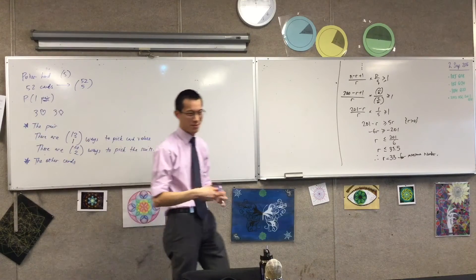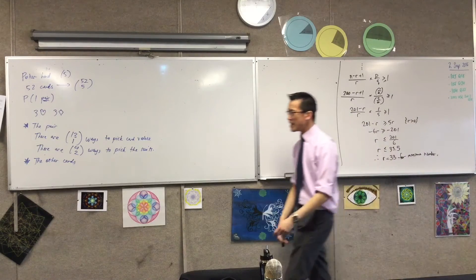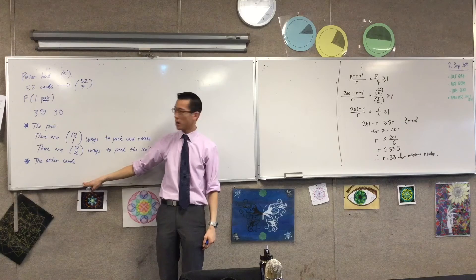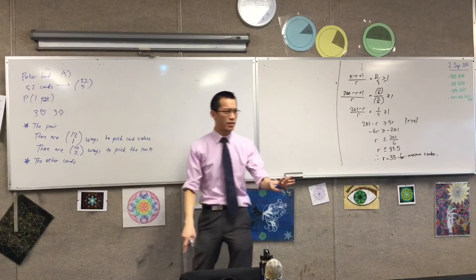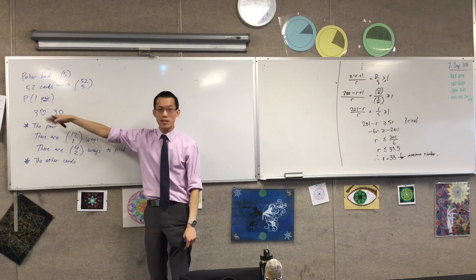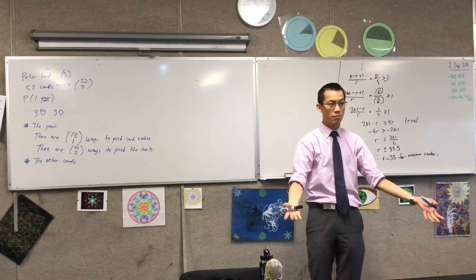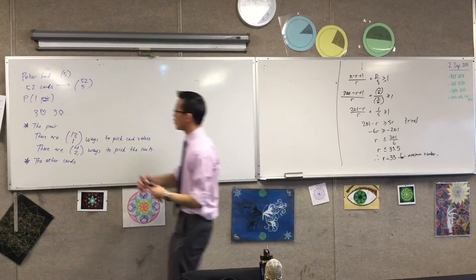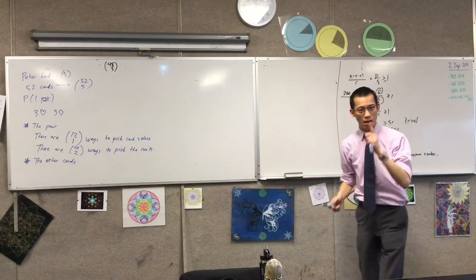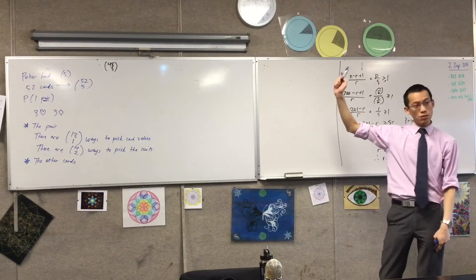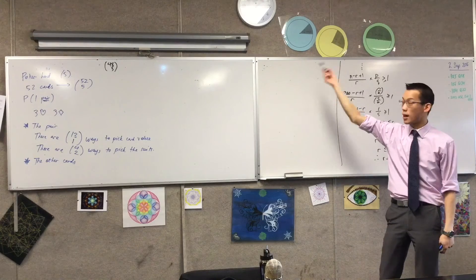Now, instinct might tell you: I don't care about what the other cards are, I've got 48 left to choose from — because I don't want a three of a kind or a four of a kind, so if I'd chosen the threes I don't want to pick them again. So it's like I've got 48 other cards to choose from, and I have to pick three. Your instinct might say 48C3. But if you do that, you'll overcount.